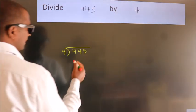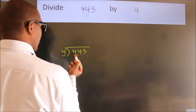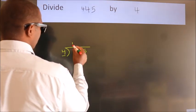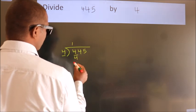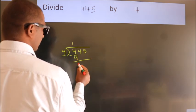Next, here we have 4. Here 4. When do we get 4? In the 4 table. 4 once is 4. Now we should subtract. We get 0.